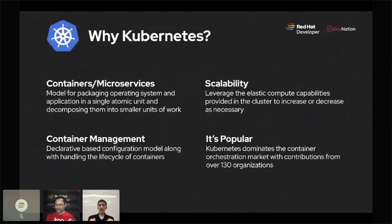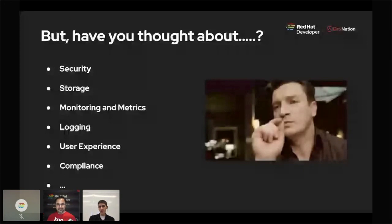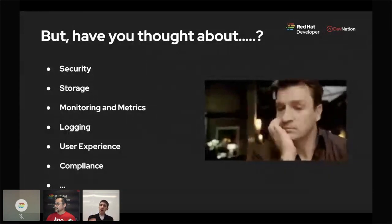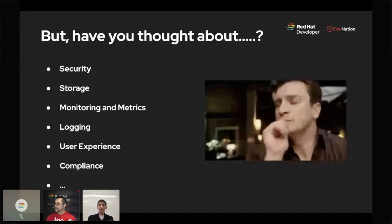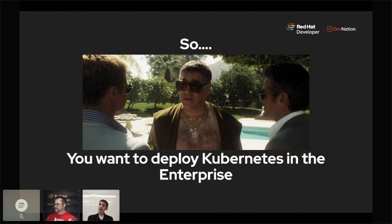Kubernetes is incredibly popular — one of the biggest and most popular open source projects out there today. When you want to deploy Kubernetes, have you thought about a number of different factors? Everything from security, storage, monitoring metrics, logging, the user experience, and compliance — these are the things you need to know when deploying in an enterprise scenario. What does it really look like and how do you actually accomplish it? And how do you have your organization adopt it successfully?